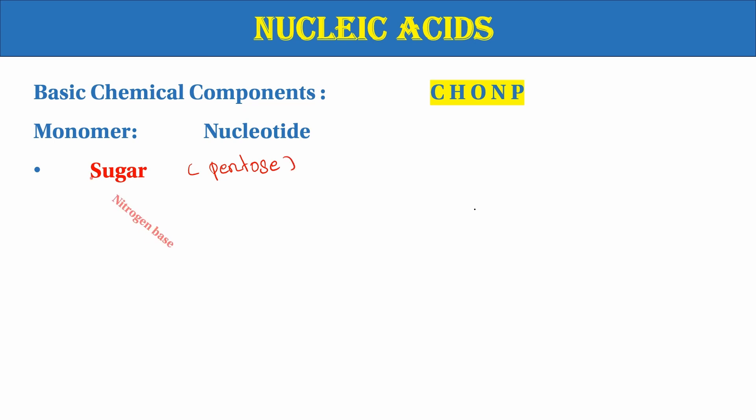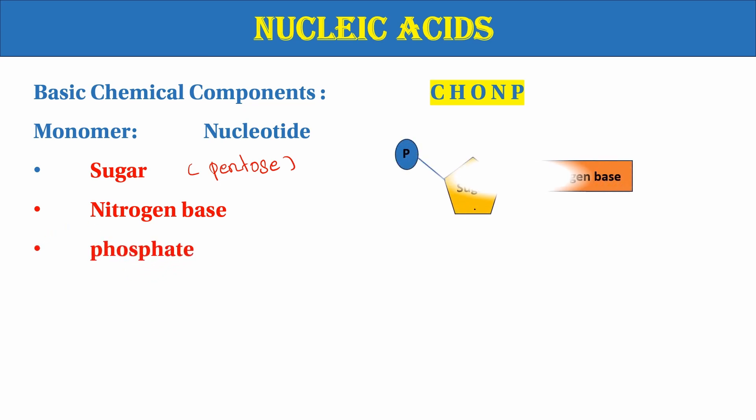The second component is a nitrogen base. The nitrogen-containing compound is called a phosphate group. So the three components — sugar, nitrogen base, and phosphate group — together form a nucleotide.